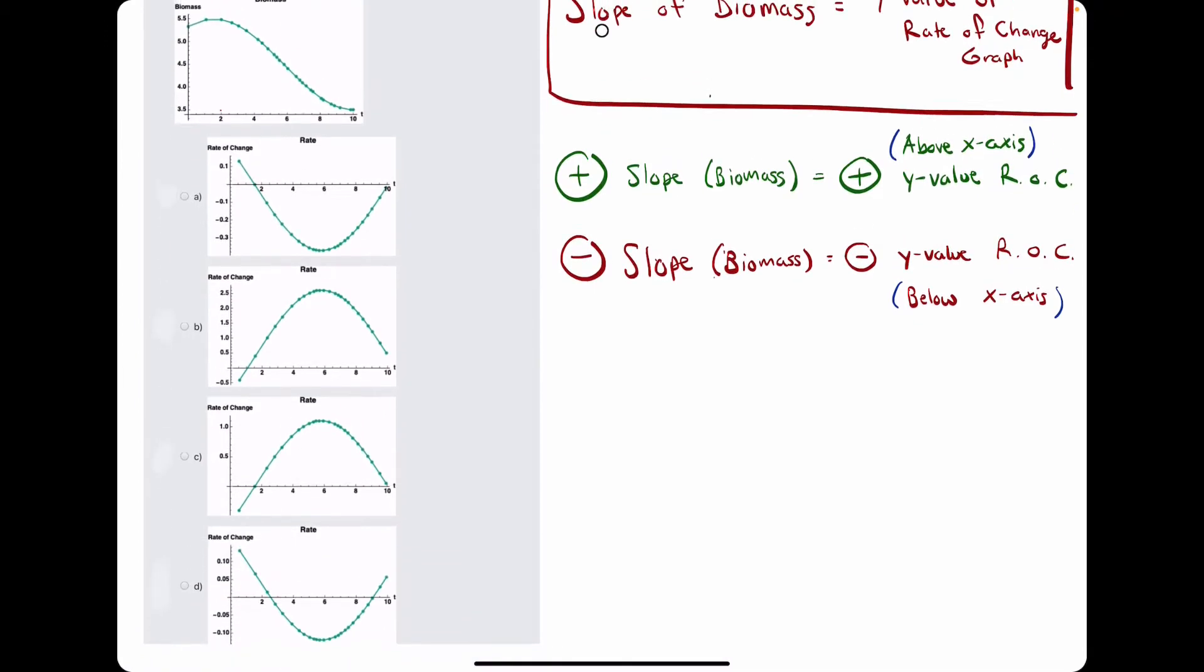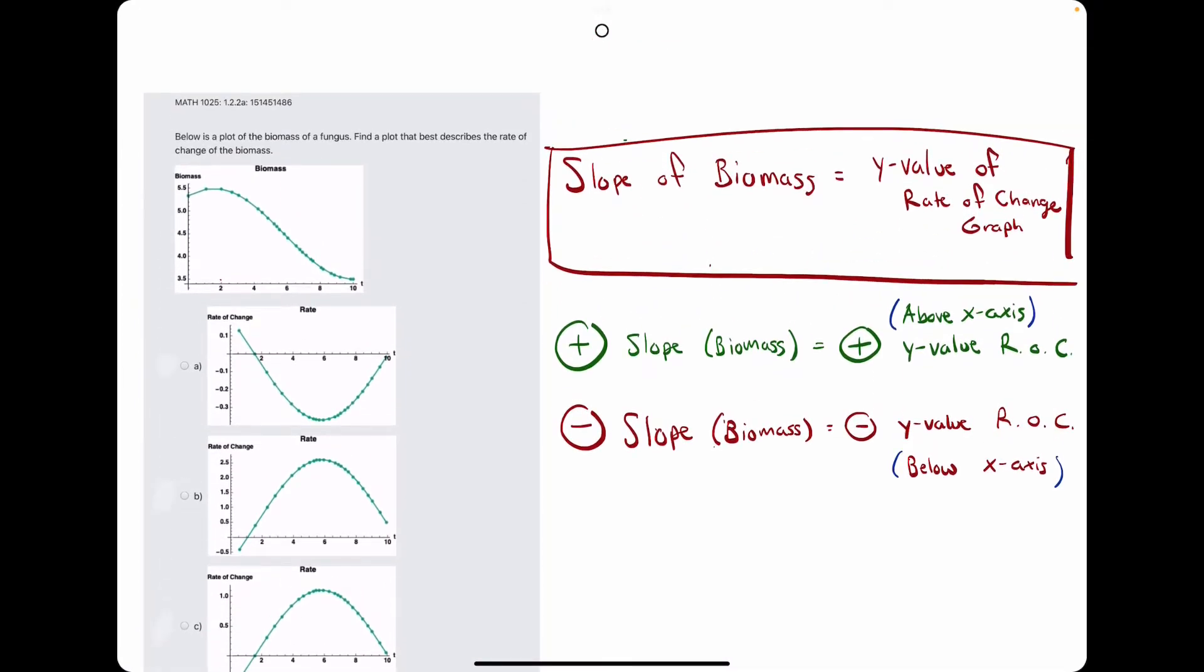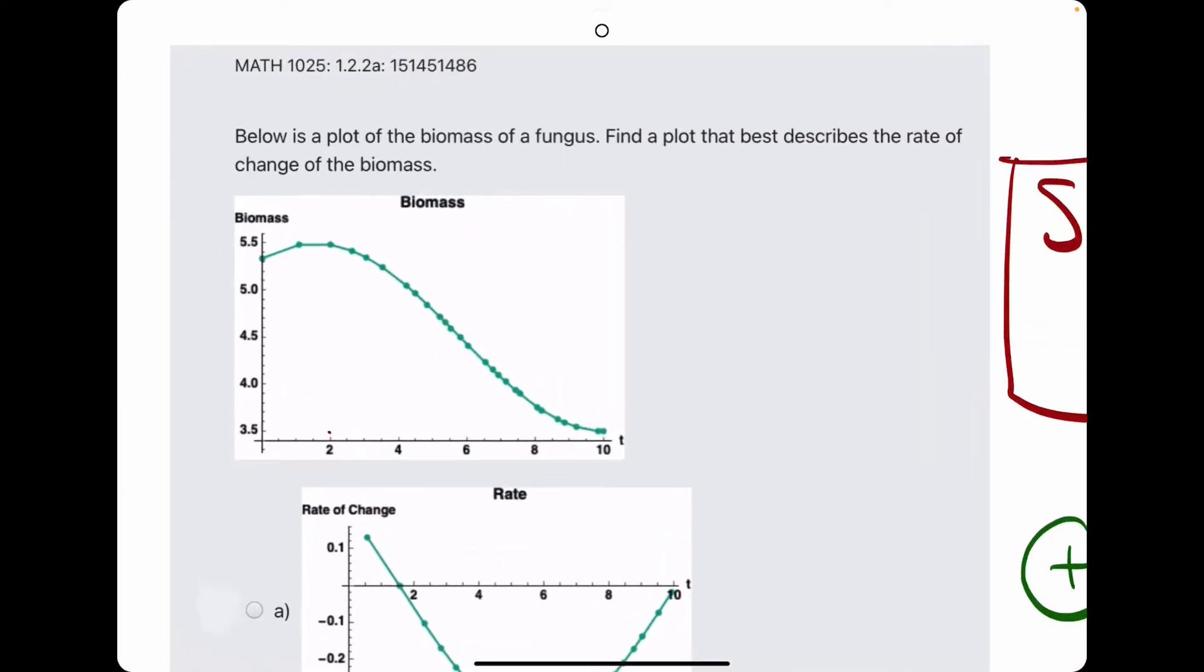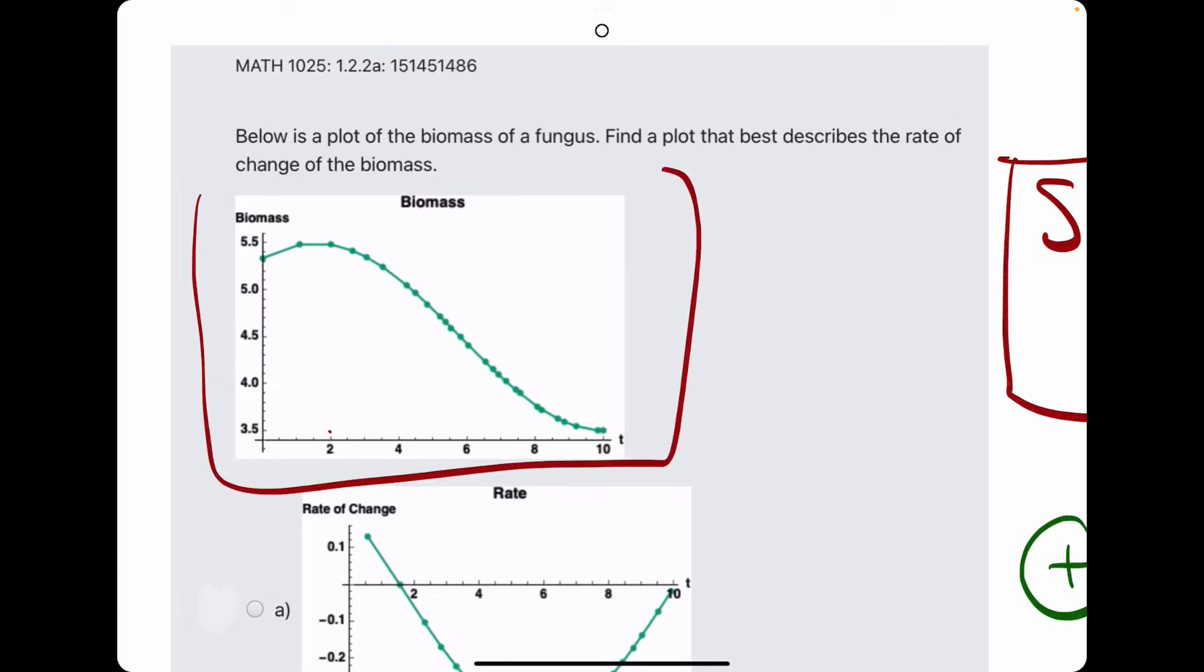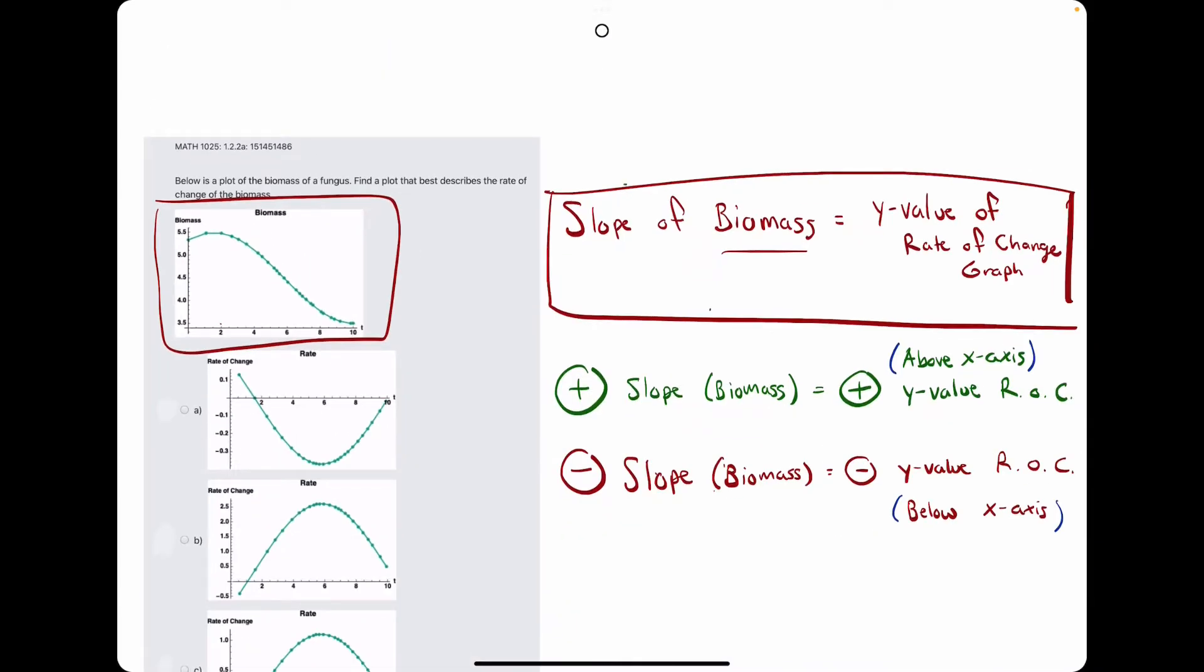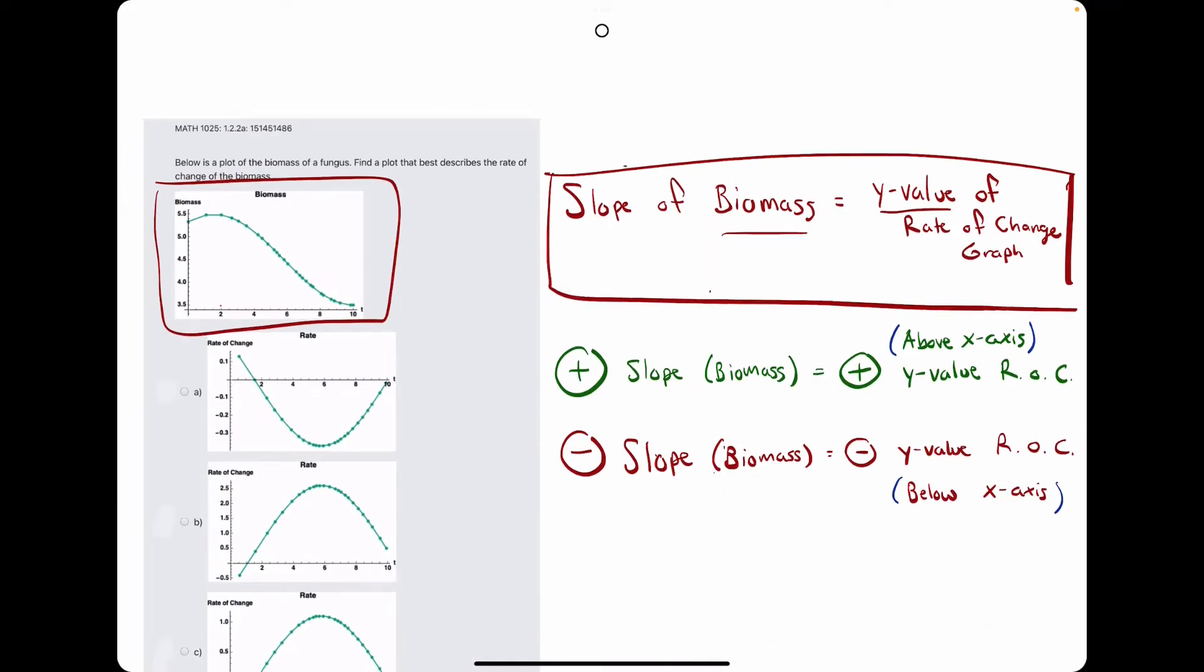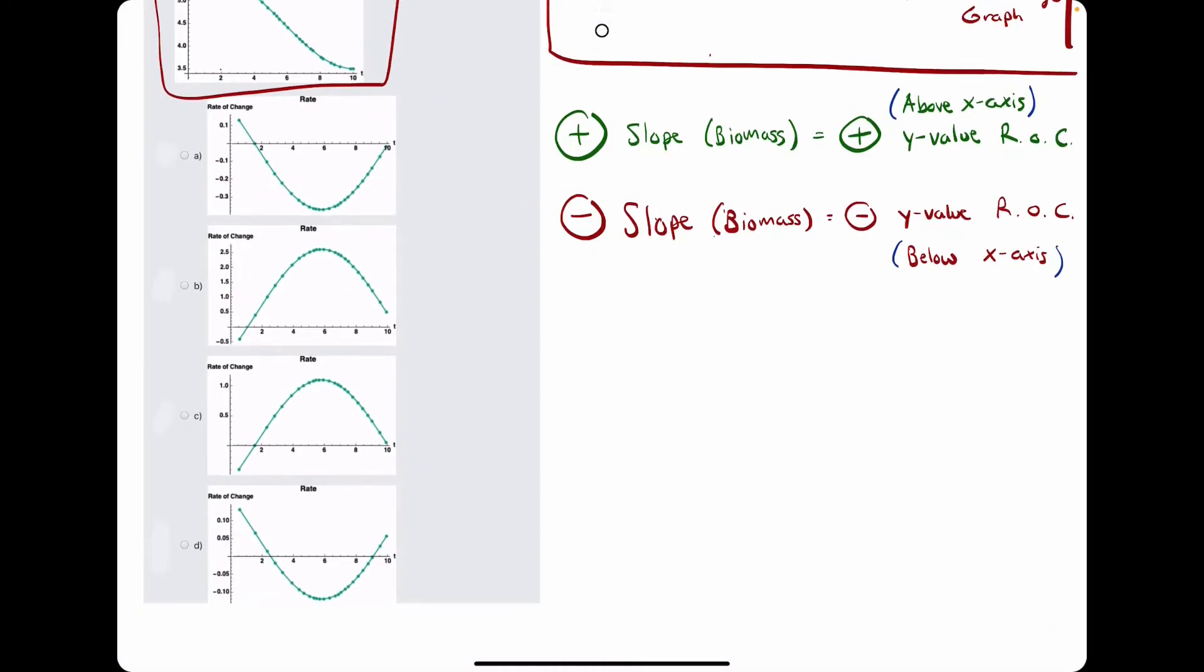It seems a little intimidating, but let's break it down. The important concept here is that the slope of the biomass function, the original function here, the slope values of that function should be equal to the y values of the rate of change graphs here.